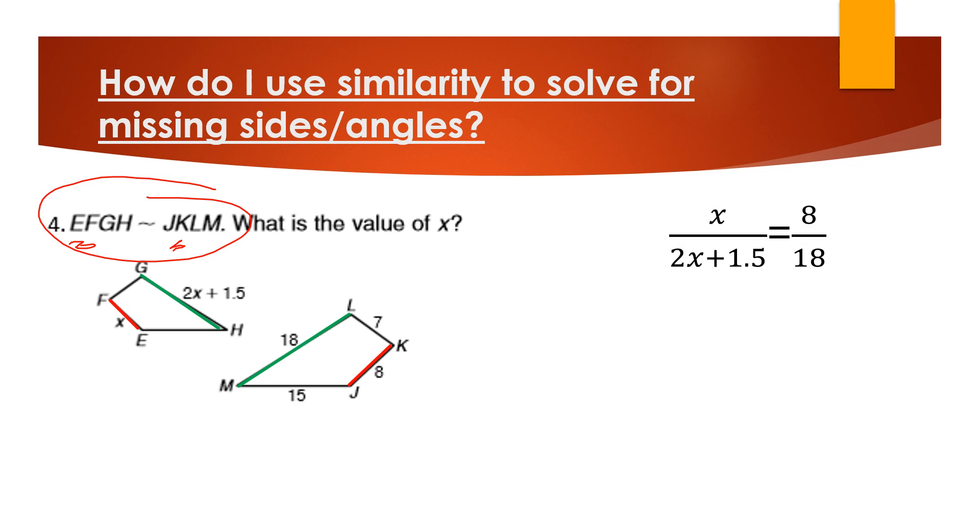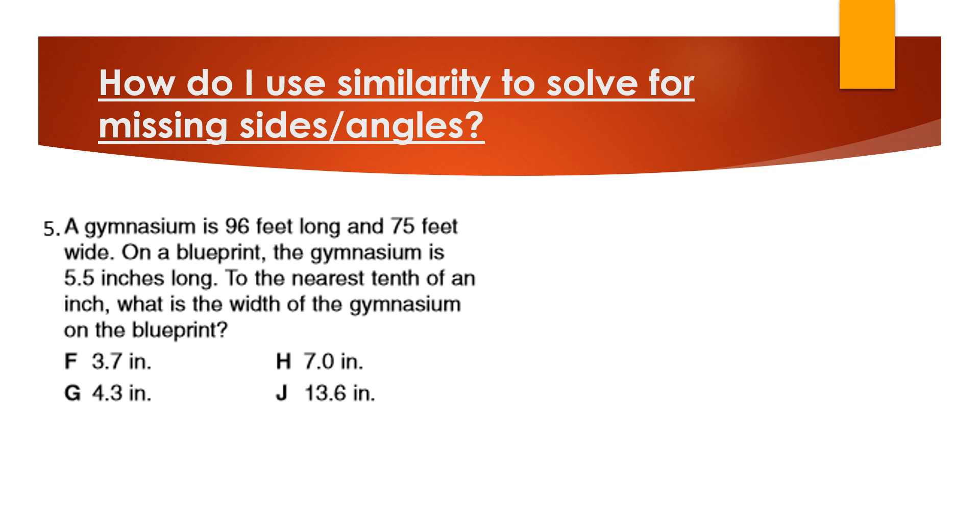When you set that up, you got x over 2x plus 1.5 equals 8 over 18. Then you're just going to cross multiply and solve it for x. Okay, going into some bigger word problems.